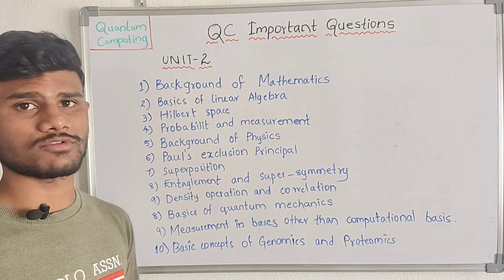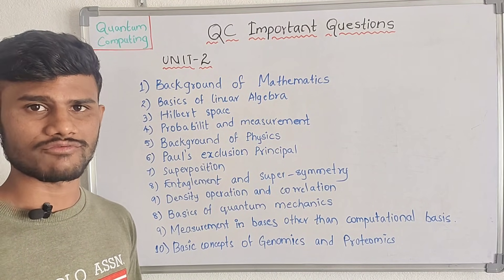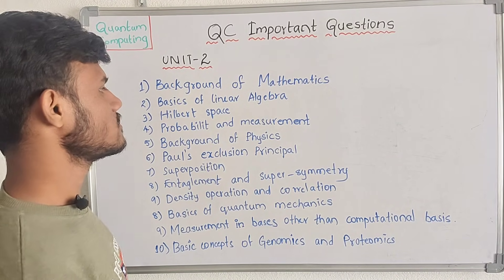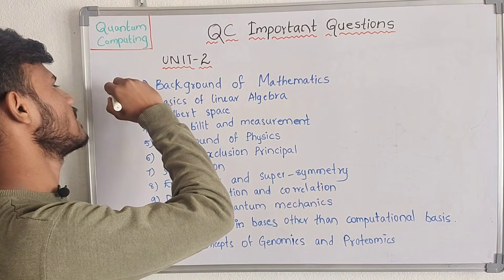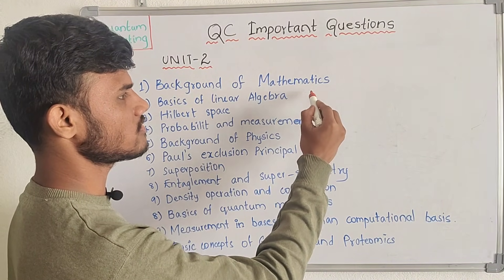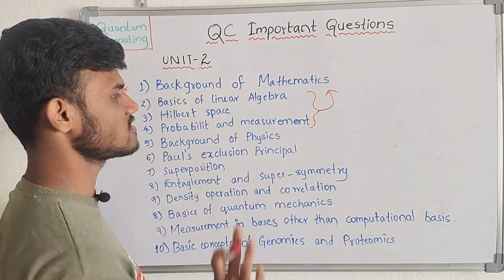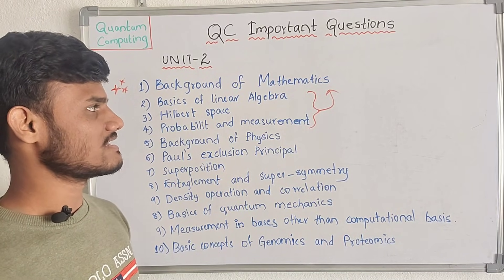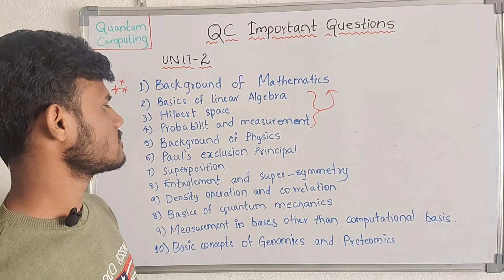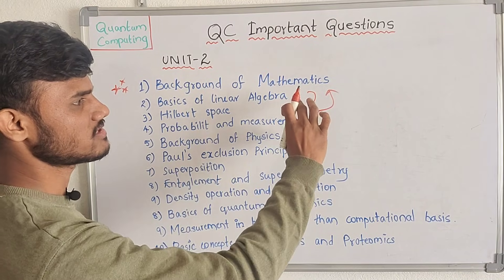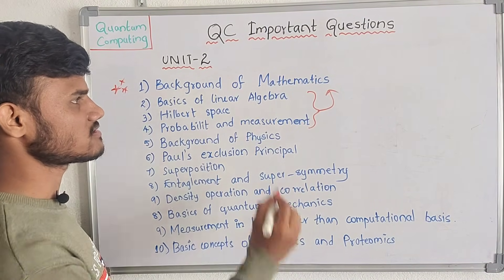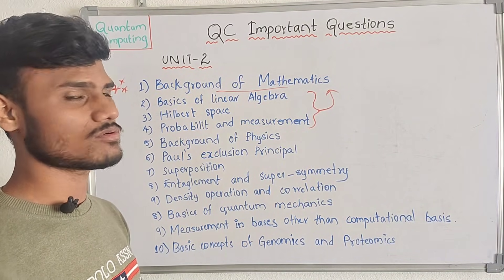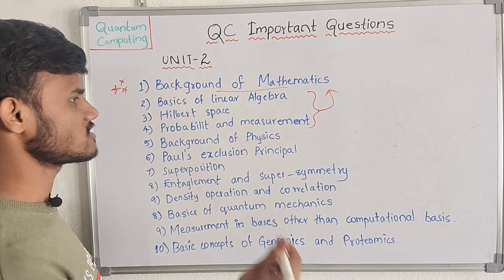Now, coming to our second unit. In the second unit, we have background of math, background of physics, and background of biology. Background concepts are in-depth. First, we have background of math — linear algebra, and probability and measurements. These are 3 questions. Background of math and the Psi equation — it might be a direct answer or a definition.